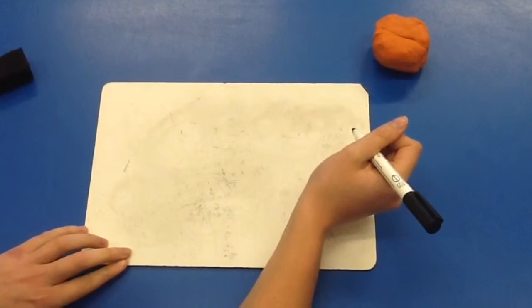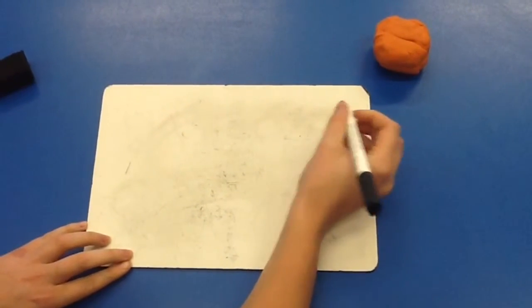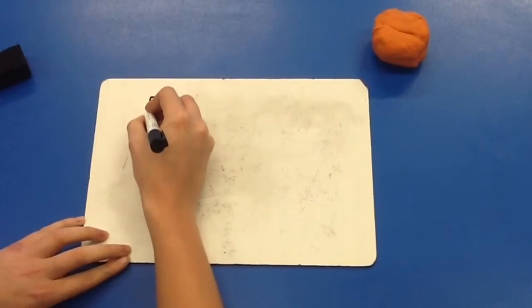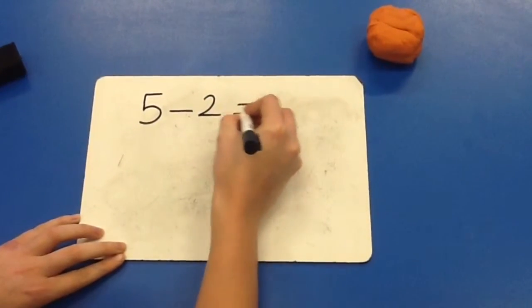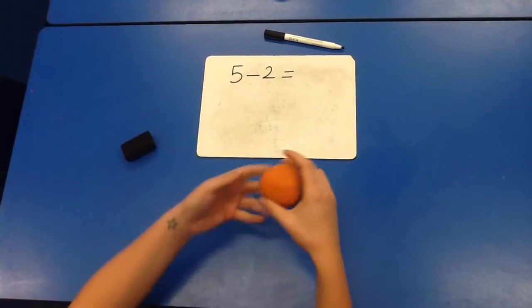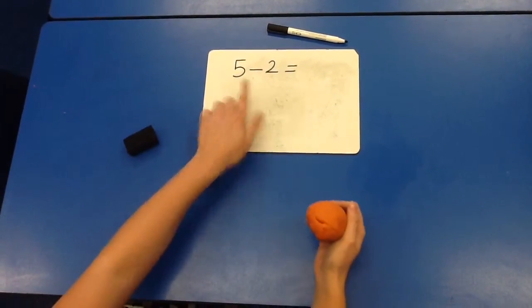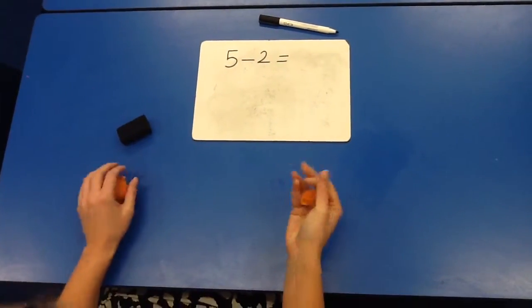First let's look at the number sentence 5 take away 2. 5 take away 2 equals. To work out the answer, get your ball of play-doh and make 5 balls.